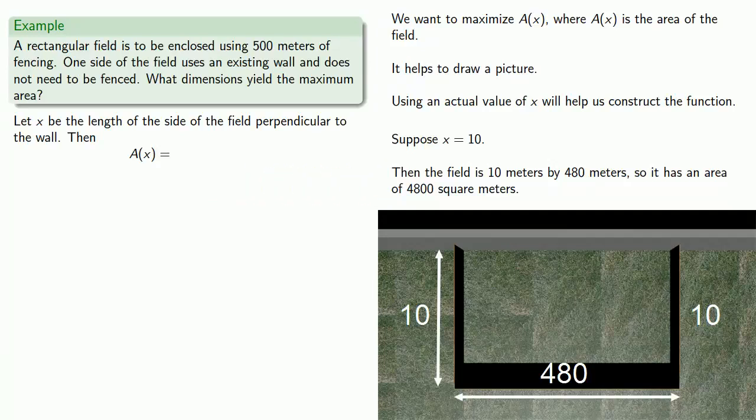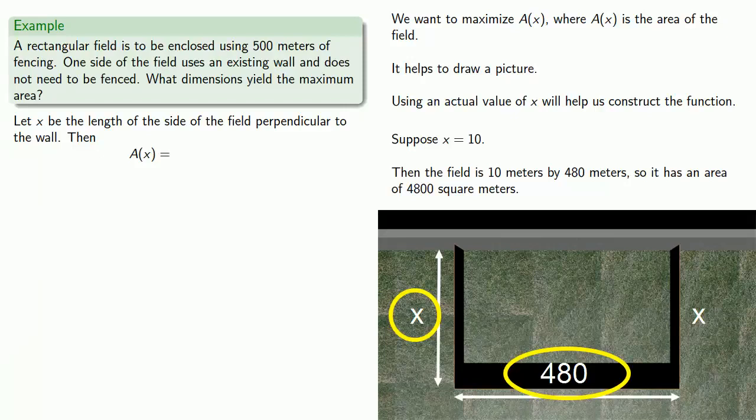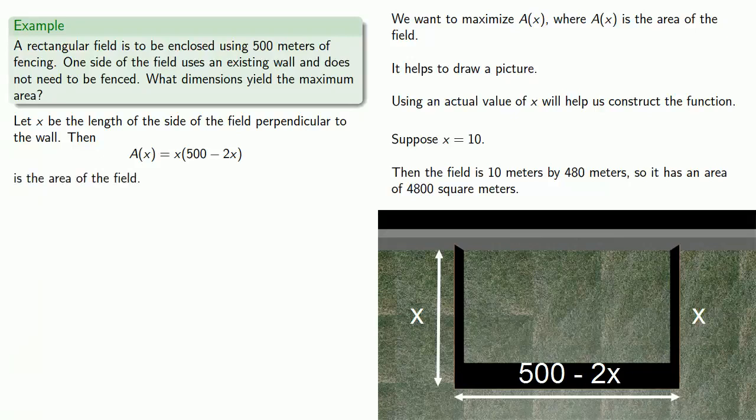Now let's consider what we did there. The area is going to be length times width. So this length is x and the width is whatever is left over. And I got that amount by subtracting twice the length from 500. And so this gives me an area formula of x times 500 minus 2x. And so now I have my function, a of x, that gives me the area of the field.